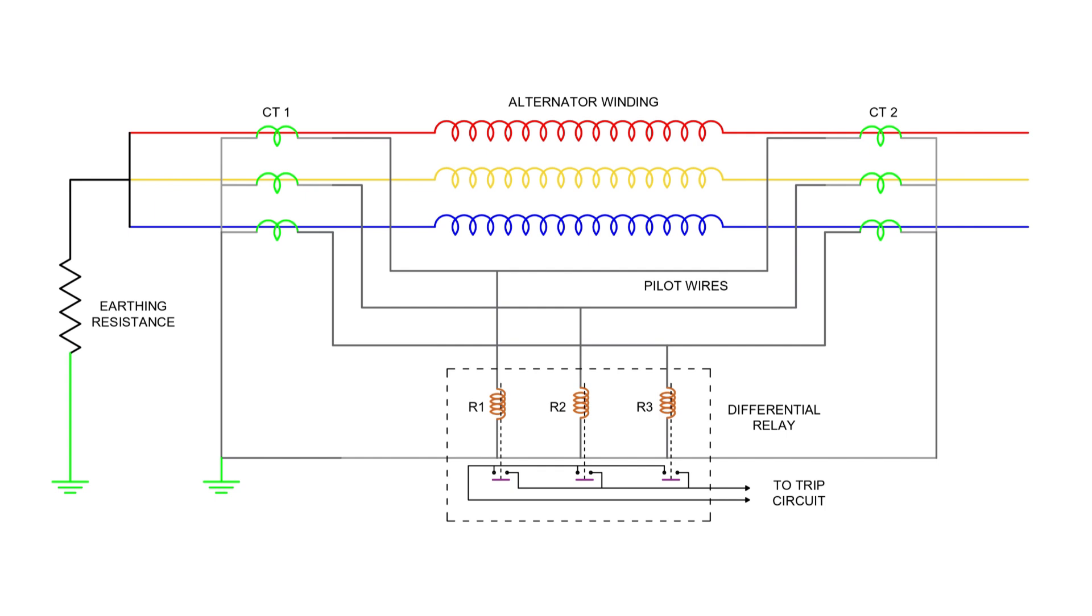The relay coils, one for each phase, are also connected in a star configuration, with the neutral point tied to the CT common point. Each outer end of the relay coils connects to its respective pilot wire. The pilot wires are connected between equipotential points in the system, ensuring equal voltage and no current flow through the relays under healthy conditions.